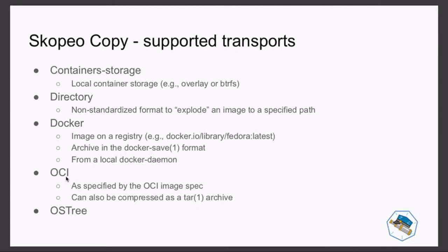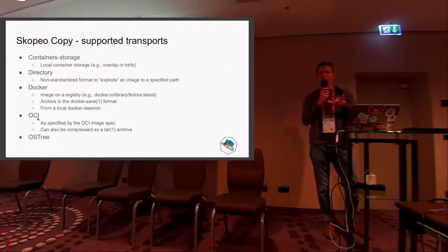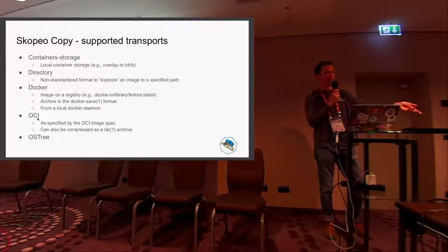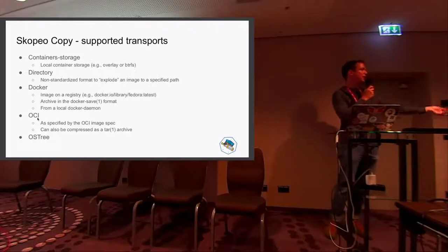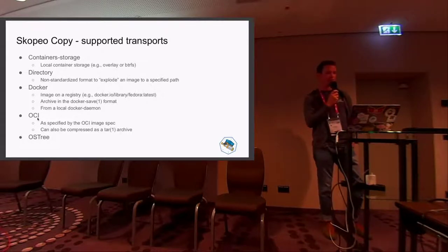Scopio can do more. Nowadays it's mostly used for copying images across different transports. We can use it to copy an image from container registry A to container registry B without doing a pull, then a tag, then a push — everything happens in one step. Scopio supports different kinds of transports, meaning we can convert or transform images: explode it on local storage, convert it into an OCI image or back to a Docker one, explode it to OSTree.